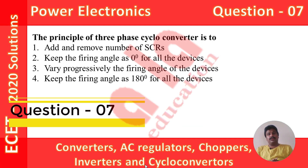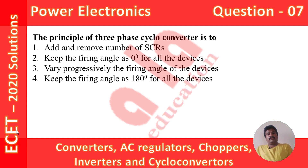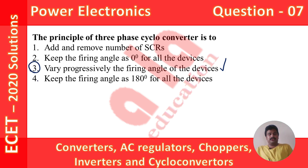This question is based on cyclo-converters. The principle of a 3-phase cyclo-converter: a cyclo-converter is a circuit that converts frequency from one magnitude to another. Whenever a 3-phase cyclo-converter is used, we need to vary the firing angle of the devices connected in the cyclo-converter. So the correct answer is: vary progressively the firing angle of the devices, and option 3 is the correct option.